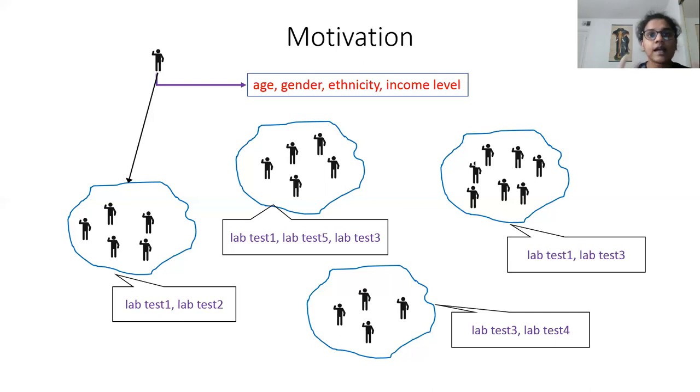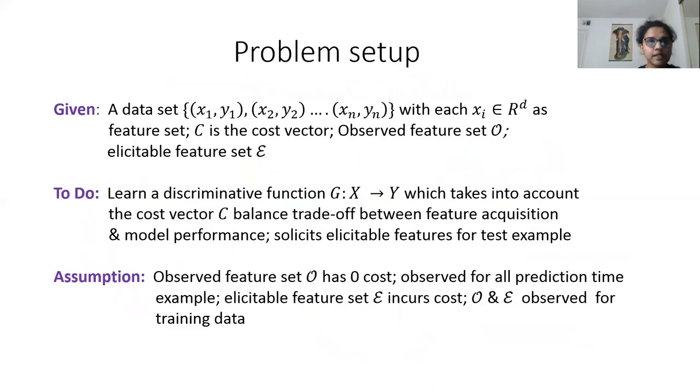Coming to the problem setup, we have a usual supervised problem with a dataset with n instances, a cost vector specifying feature acquisition cost of every feature, and two different feature subsets: observed and elicitable. Our task is to learn a discriminative model g which balances the trade-off between this cost and model performance, and solicits elicitable features for partially observed test examples.